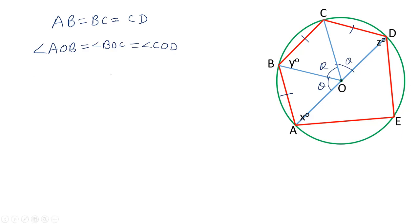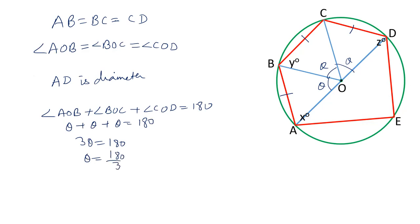AD is a straight line diameter, and therefore angle AOB plus angle BOC plus angle COD equals 180 degrees. Each is equals to theta. So the value of theta is 180 by 3, that is 60 degrees. So we have got value of this angle, 60 degrees.